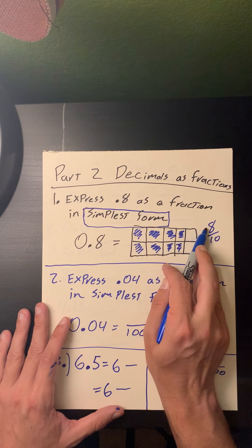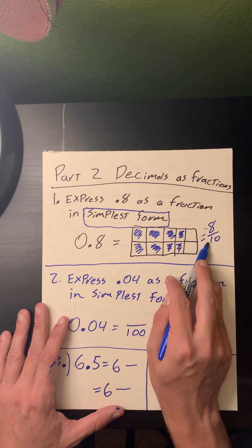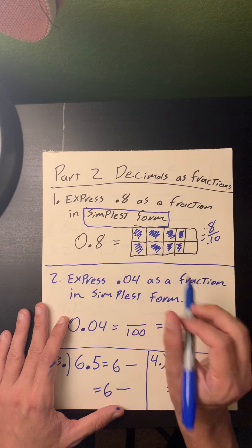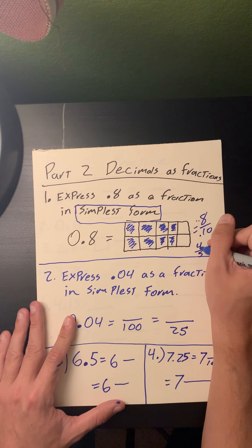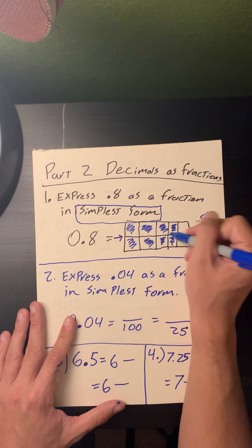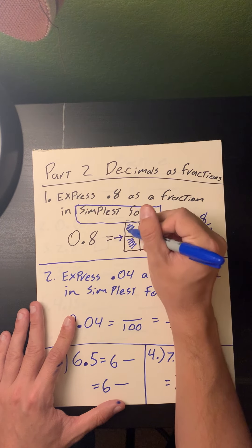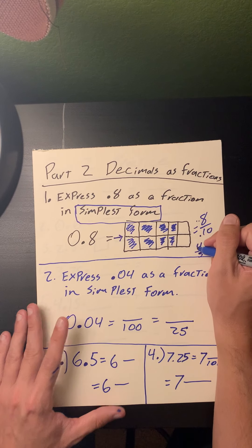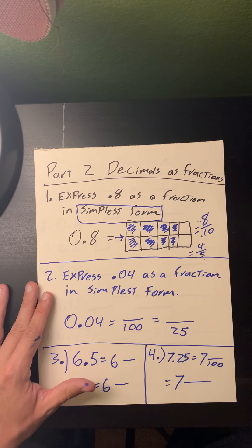Eight divided by 2 equals 4, and ten divided by 2 equals 5. If I drew out the model, I can take away the middle line, giving me 4 fifths. So zero point eight as a fraction in its simplest form is four out of five, or four fifths.